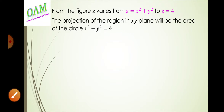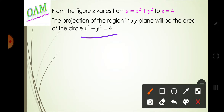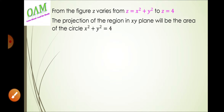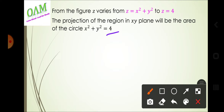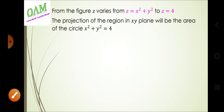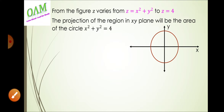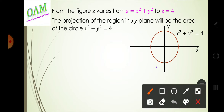The projection of the region in the xy-plane will be the area of the circle. The projection onto the xy-plane gives a circle, which is equal to the region where x² + y² = 4.